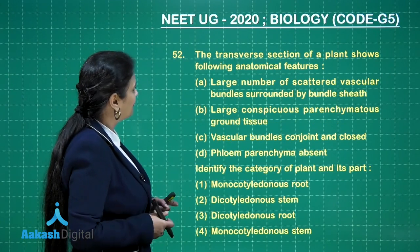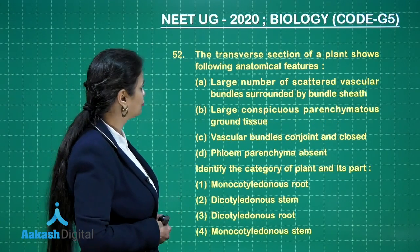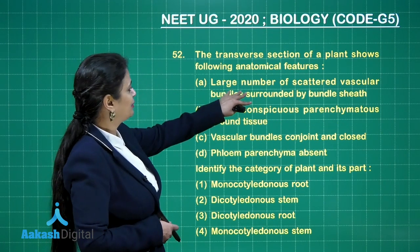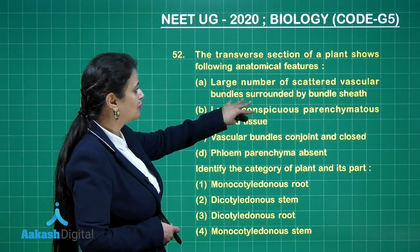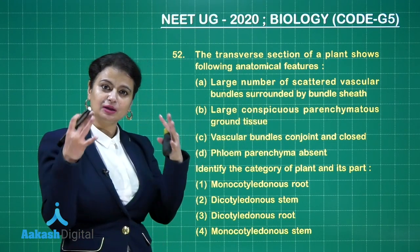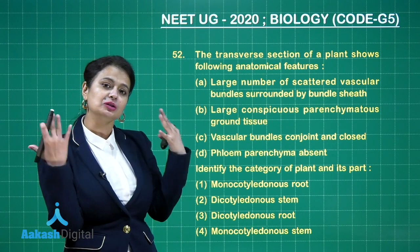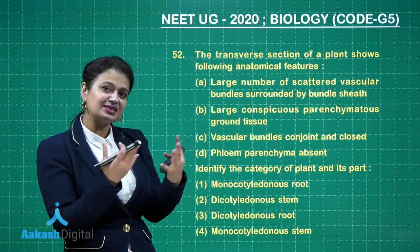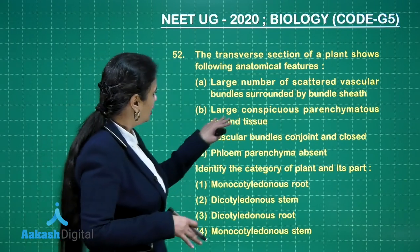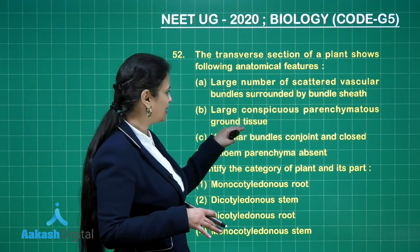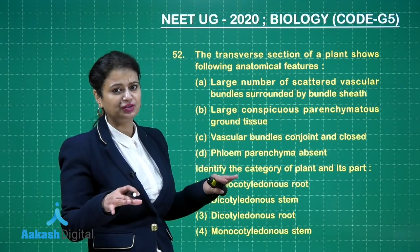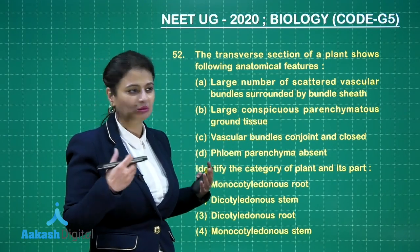Moving to question 152: the transverse section of a plant shows a large number of scattered vascular bundles surrounded by bundle sheath. In a dicot stem, vascular bundles are arranged in a ring, but here they are scattered, so this must be a monocot stem. Also, the ground tissue is large and conspicuous, with no pith, no endodermis, and no pericycle — it is undifferentiated.